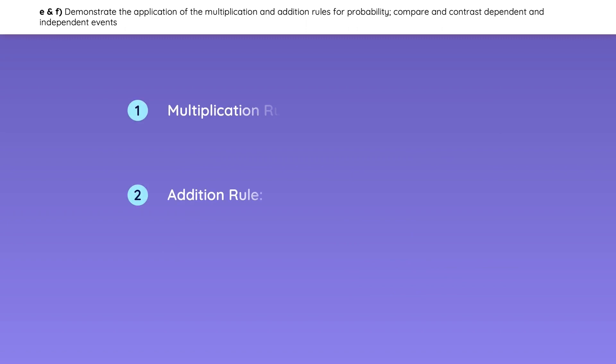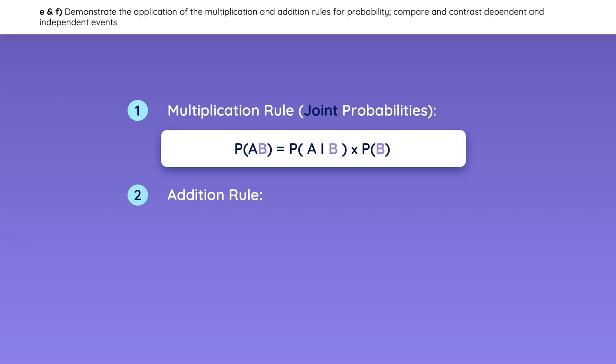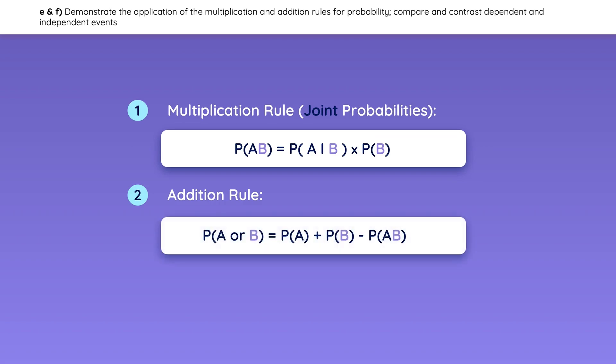Now let's actually calculate some probabilities using the following probability rules. The multiplication rule, or joint probability rule, tells you the probability of A and B. The addition rule gives the probability of A or B. Let's look at each of them individually to make them easier to remember.